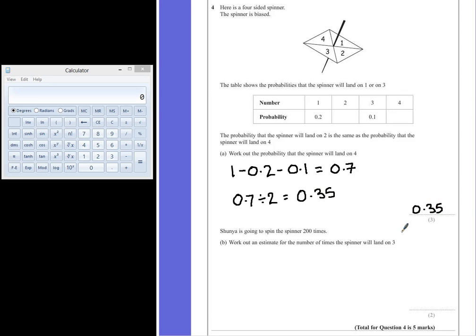Shunyeh is going to spin the spinner 200 times. Part B. Work out an estimate for the number of times the spinner will land on 3. Well, the probability to land on the number 3 is 0.1. So if we multiply this probability by the number of times the experiment has been repeated, so 0.1 multiplied by 200...